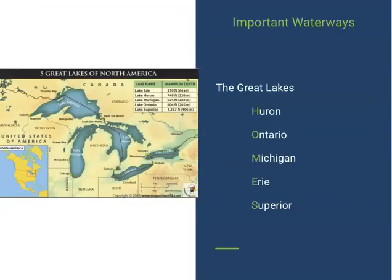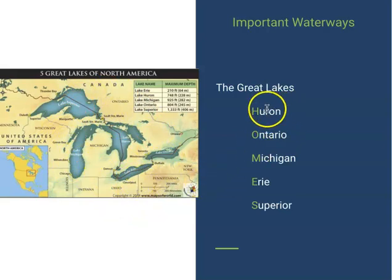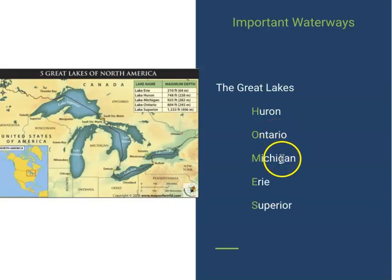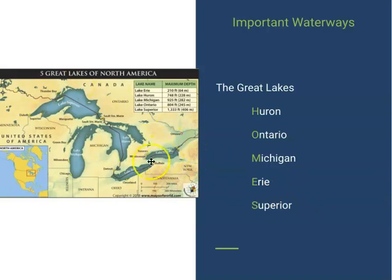Talking about geography, the Midwest has a lot of really important waterways. Some are these Great Lakes. There are five Great Lakes, and the best way to remember them is the acronym HOMES: H for Huron, O for Ontario, M for Michigan, E for Erie, and S for Superior. On the map you have Lake Ontario, Lake Erie just north of Ohio, Lake Huron, Lake Michigan, and Lake Superior at the top.